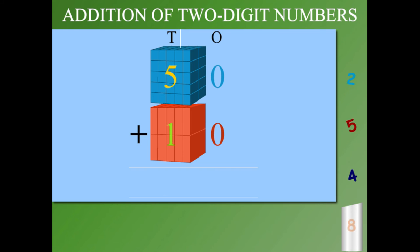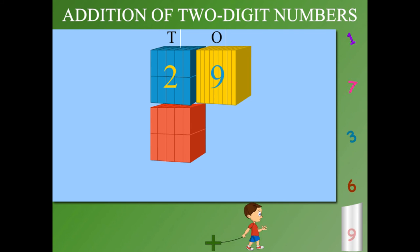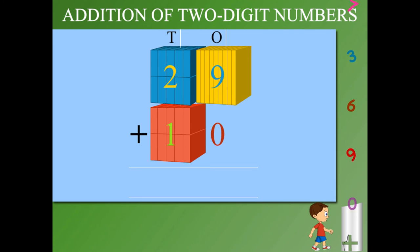No ones, so add the tens: it becomes 60. Here is 29 plus 10. On the ones side,